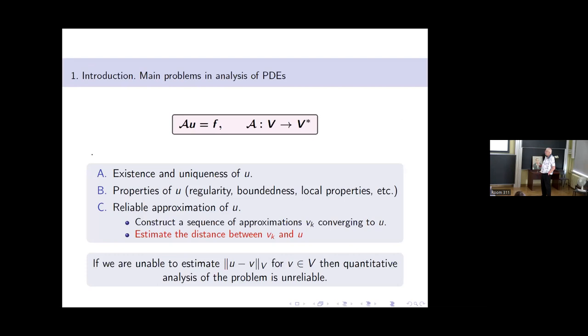We have three basic problems. The first is existence and uniqueness, the basic correctness of the problem. The second is properties of the exact solution: regularity, boundaries, and many other things. Then item C, which is reliable approximation of U. This has two sub-items: how to construct approximation, and how to verify the solution is not garbage but really related to the exact solution.